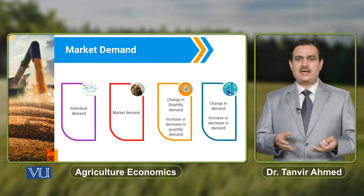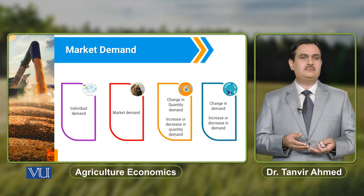So in this module, we basically discussed demand by individuals — willingness and ability to buy by a particular individual. Then, by aggregating demand by all the individuals in the market, we reported market demand, and then we made a differentiation between change in quantity demand and change in demand. Thank you very much.